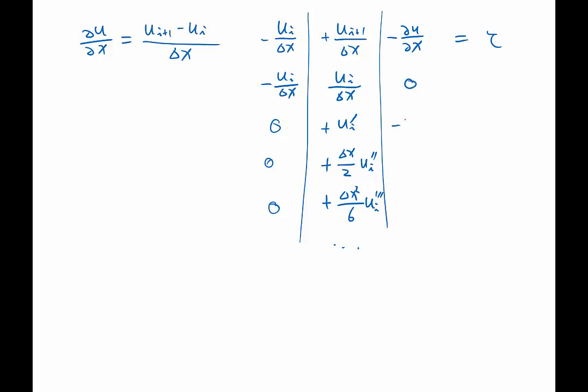This is 0, this is just a minus Ui prime, so this is at xi, and 0, 0, etc. So, if you add them together, look at tau, the first term cancels, 0, as it should be. The second term cancels, 0, as it should be.